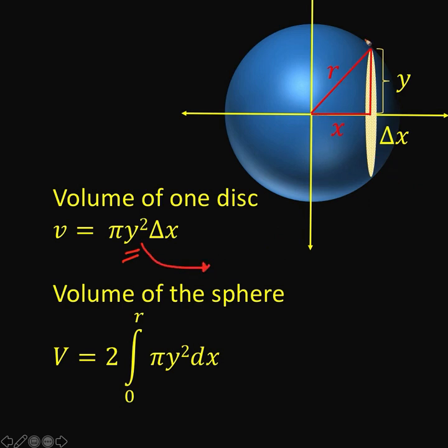Look at this right triangle that we form. We have a hypotenuse of r, the length of one leg is x, and the length of the other leg is y. Using now the Pythagorean theorem, we have the formula x squared plus y squared equals r squared. And so, we can now express y squared in terms of r squared and x squared this way. y squared equals r squared minus x squared.